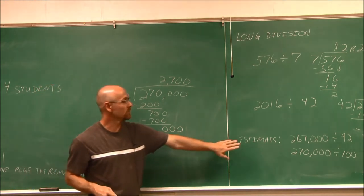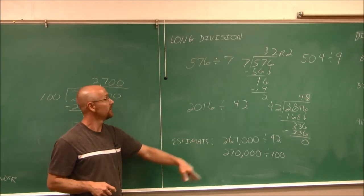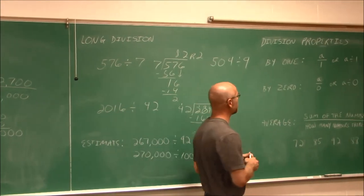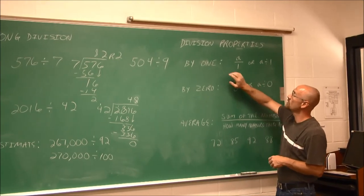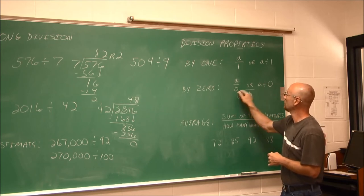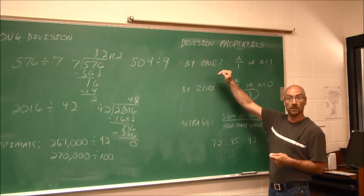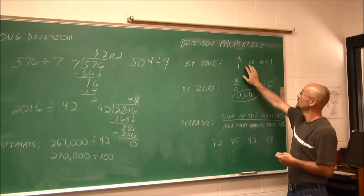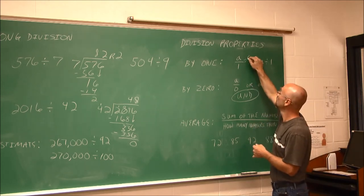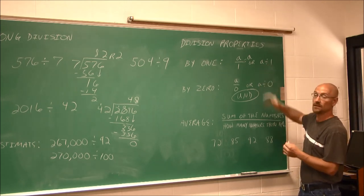Let's review the division properties. You can never divide by 0 — this is always undefined. That is a property of division. And then we have division by 1, which is like the identity in multiplication: 1 times anything is that value. Similarly, anything divided by 1 is that number — A divided by 1 equals A. Anything divided by 1 is that number.